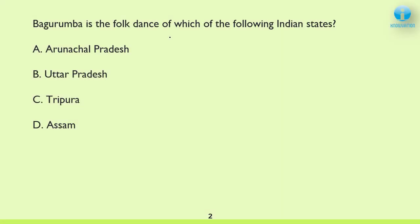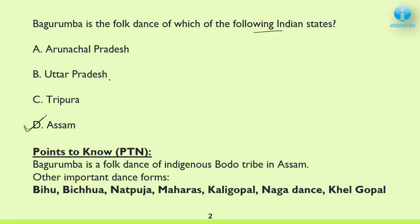The first question for today: Bhagurumba is the folk dance of which of the following Indian states? The correct answer is D — Assam. Bhagurumba is a folk dance of the indigenous Bodo tribe of Assam. Please do note down the name of the tribe as well.